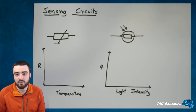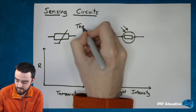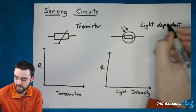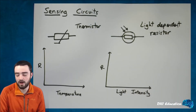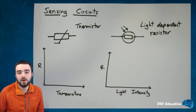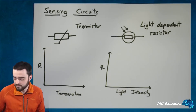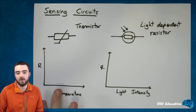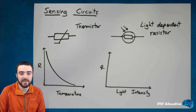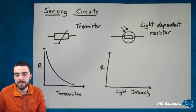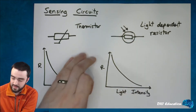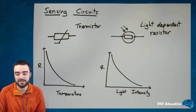Earlier on in the course you came across a couple of components: the thermistor and the light dependent resistor, or LDR. The thermistor will vary its resistance depending on the temperature — as the temperature increases, the resistance of the thermistor decreases. With a light dependent resistor, the resistance changes depending on the light intensity, and as the light intensity increases, the resistance of the LDR decreases.